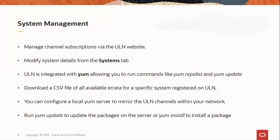We can subscribe or unsubscribe from channels for a system from the System tab in the ULN website. Also, the name and CSI for the registered system can be edited in the system details section, which can be seen by clicking on the registered system name. All available errata for a registered system can be downloaded as a comma-separated values (CSV) file. ULN is integrated with YUM, which allows getting updates to the system directly using YUM. YUM REPOLIST will list the subscribed channels in ULN. YUM INSTALL can be used to install new packages and YUM UPDATE to update a specific package or the complete system itself.